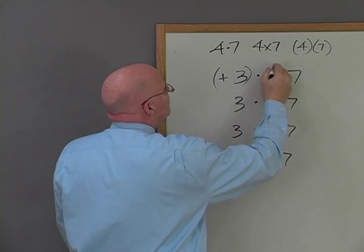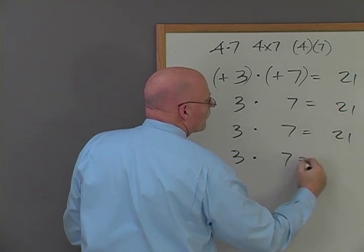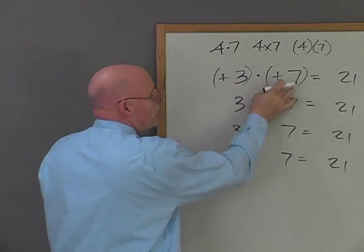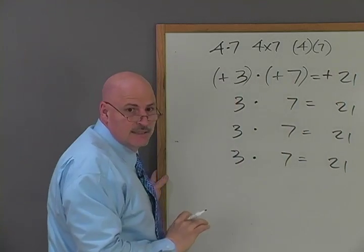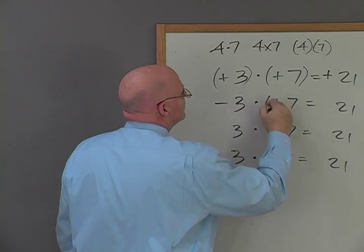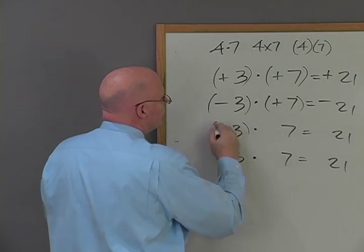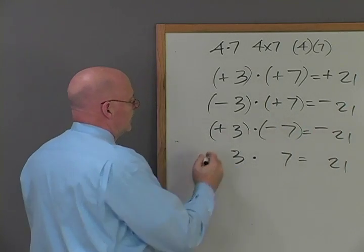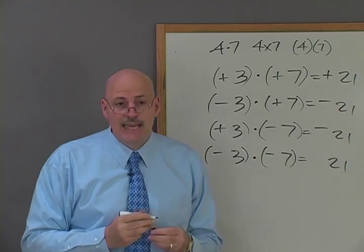So, positive three times a positive seven — we know all the answers are 21. What we're focusing on now is the symbols. Positive times a positive is going to be a positive. That's what you've been doing all your life, except you didn't have those little plus signs. What if you had a negative times a positive? That's going to be negative. What if you have a positive times a negative? Also negative. And here's the tough one: a negative times a negative.